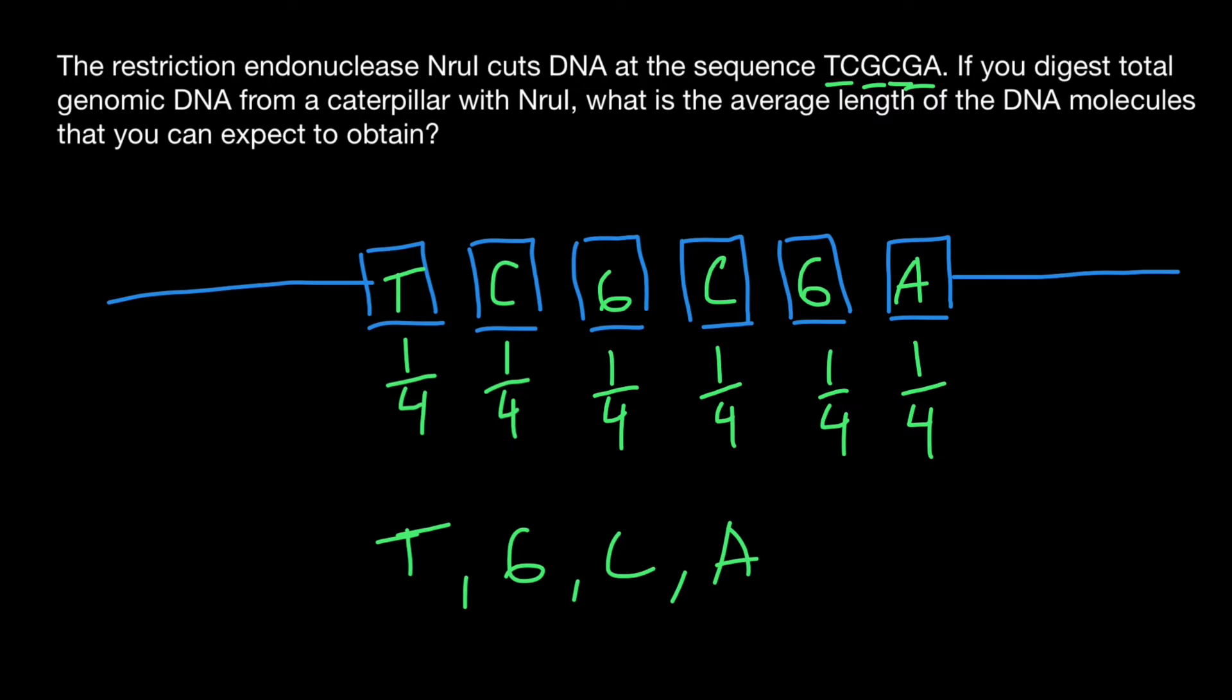Now we have to multiply all these independent probabilities. And we are going to get the probability that if we take a random sequence, the probability that we will find this particular sequence is going to be one out of 4096. And this is going to be our answer.